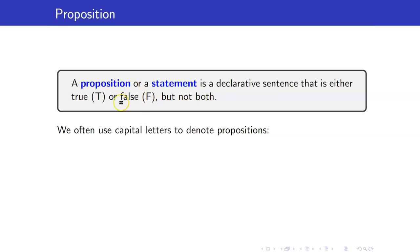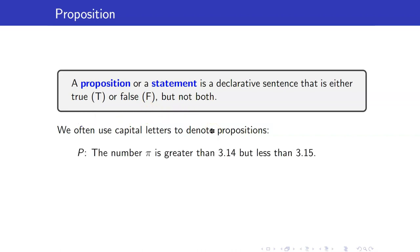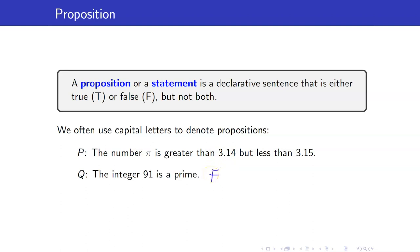We call this the truth value of your proposition. We often use capital letters to denote propositions. For example, the number pi is greater than 3.14 but less than 3.15. This is a proposition; in particular, its truth value is true. Next, the integer 91 is prime.